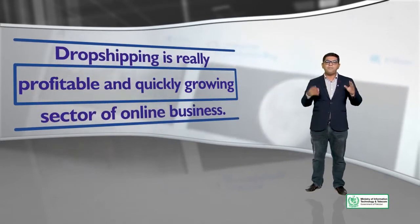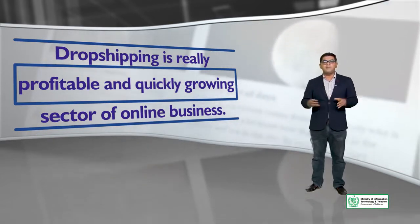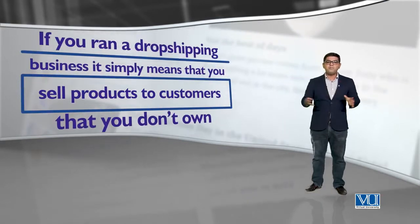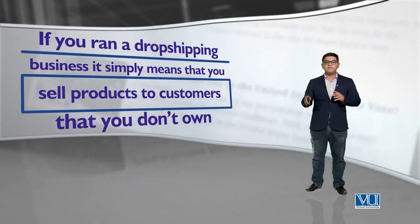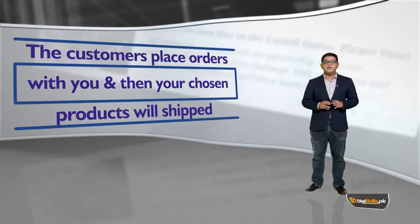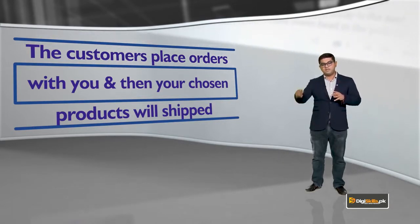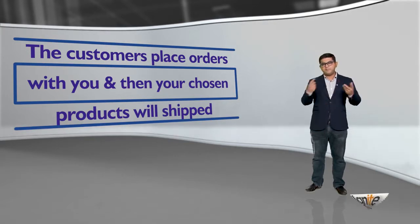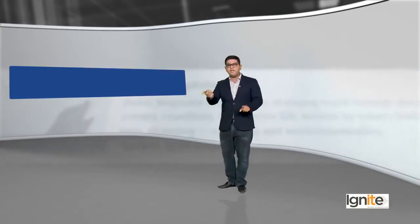Dropshipping is a really profitable and quickly growing sector of online businesses — yeh bhi ek online business karne ka tarika hai. If you run a dropshipping business, it simply means that you sell products to customers that you don't own. Aap aisee cheezein customers ko bech rahe hai joh aap own nahi karte. The customers place orders with you and then the chosen products ship ho jate hai. Aap apne man mein question kar sakte hai ke agar yeh dropshipping hai, toh phir affiliate marketing kya thi?